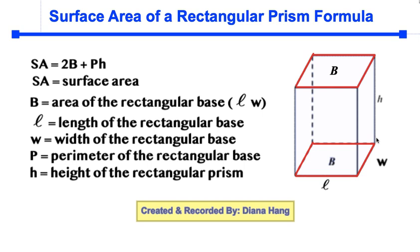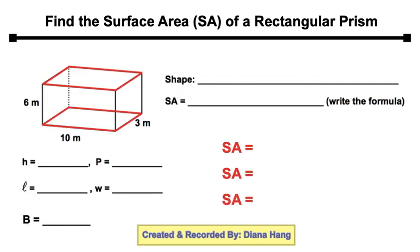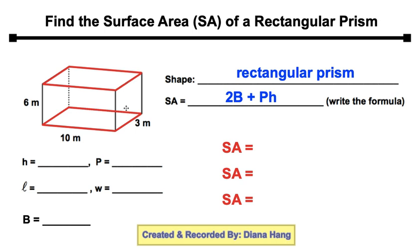Now let's look at an example. We have another picture of a rectangular prism, and the formula we'll be using is 2 times capital B plus capital P times H. The rectangular bases are outlined in red. Let's take a look at the length and the width — are you able to identify them? The length should be 10 and the width should be 3.